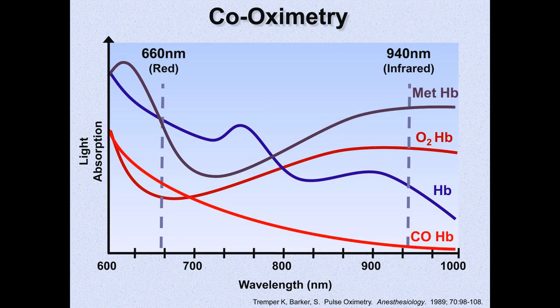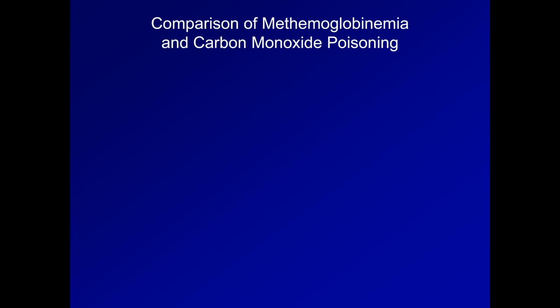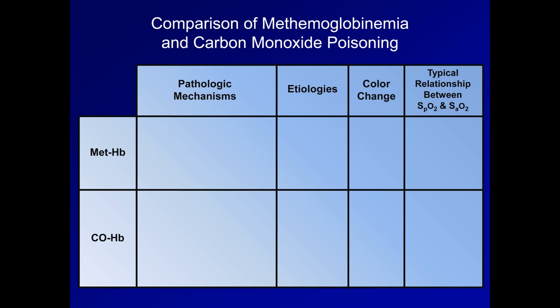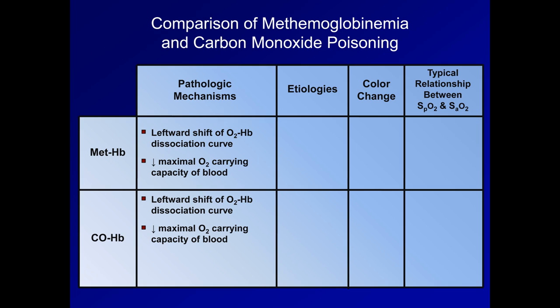At one final time, here is our absorption patterns for the four major variants of hemoglobin. So here is a summary slide comparing methemoglobin and carboxyhemoglobin. Both cause a leftward shift of the oxygen hemoglobin dissociation curve, and a decrease in the maximal oxygen-carrying capacity of blood, while carbon monoxide also disrupts the electron transport chain in oxidative phosphorylation.